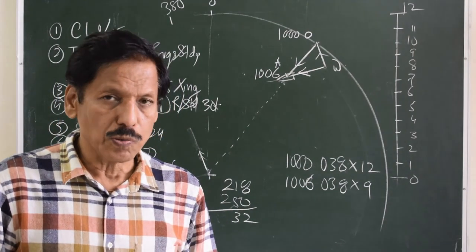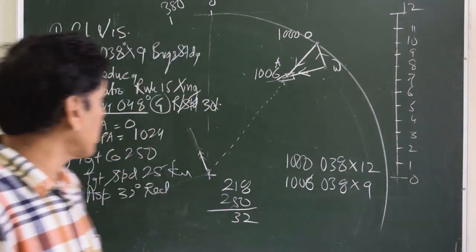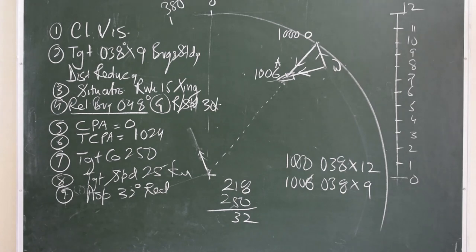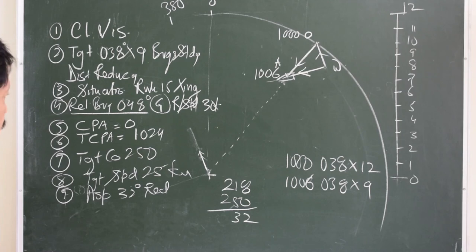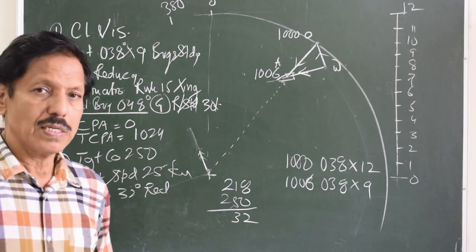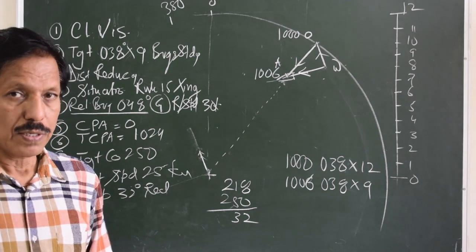Going through the complete report the duty officer would make to the master: Clear visibility. Target at 10:06 is 038 into 9 miles. Bearings are steady and distance reducing. Situation is Rule 15. Relative bearing 048 degrees green. Relative speed 30 knots. CPA zero. TCPA 10:24. Target course 250. Target speed 25 knots. Aspect 32 degrees red. Own ship is give-way vessel and target ship is stand-on vessel.